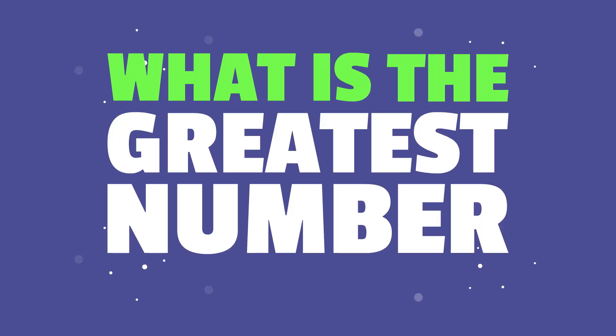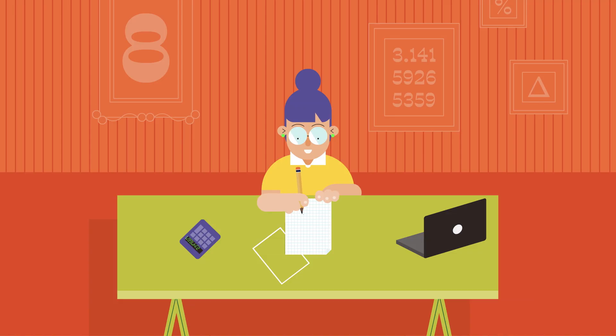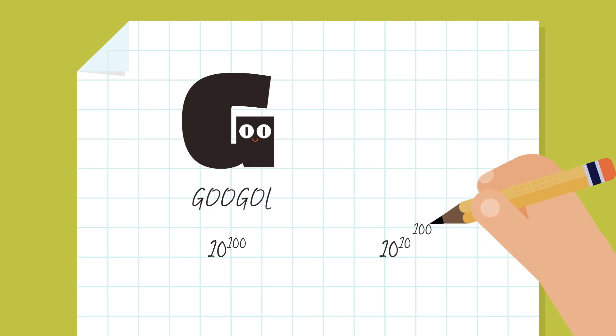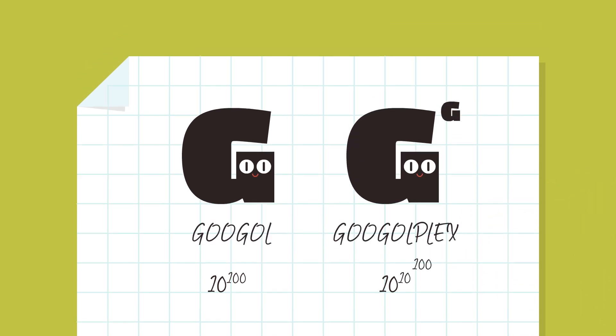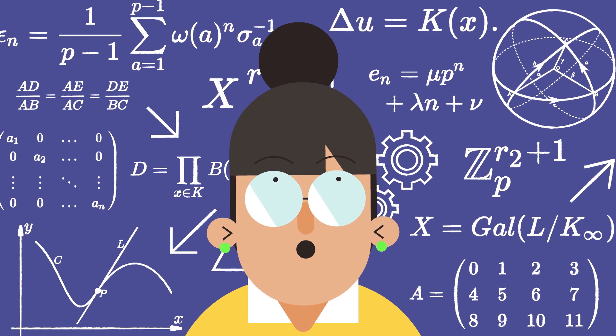What is the greatest number mathematicians can imagine? Part 2. Using exponentials we can write really large numbers like the Googol or even the Googleplex, a number so large that we could not imagine it.